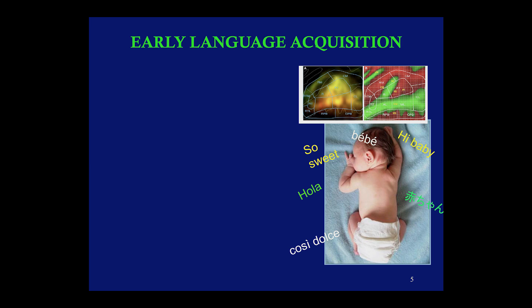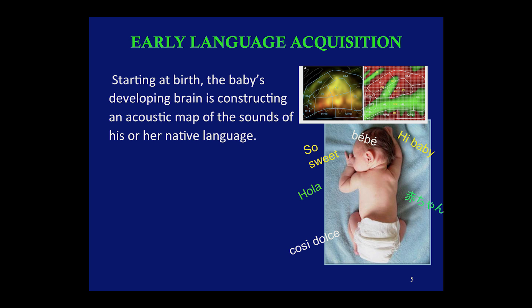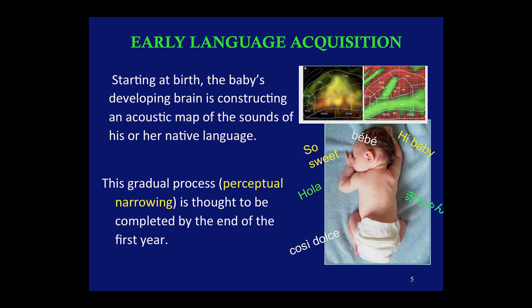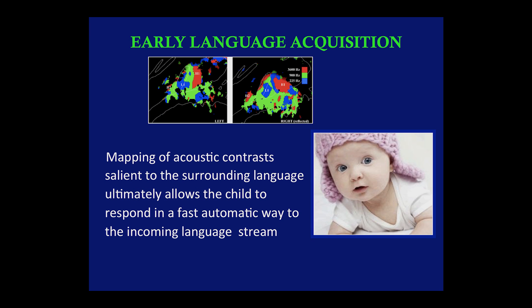As newborns, babies can discriminate the sounds of every language acoustically, but not linguistically. Starting at birth, the baby's developing brain is constructing an acoustic map of the sounds of its native language. This gradual process, called perceptual narrowing, is thought to be completed by the end of the first year. Mapping of these acoustic contrasts is important because salience to the surrounding language ultimately allows the child to respond in a fast, automatic way to the incoming language stream. This is problematic if it doesn't go well, because it impacts fluent native language as well as later reading through difficulties in phoneme-to-grapheme mapping — matching speech sounds to letters, which you need to do to read.